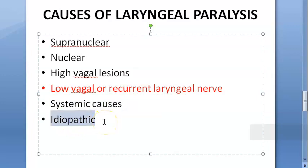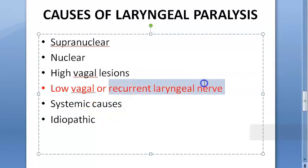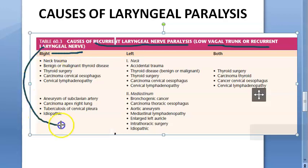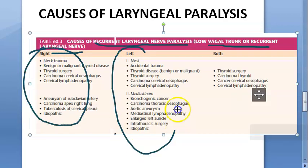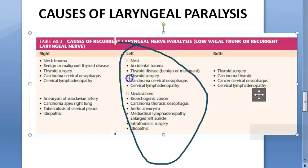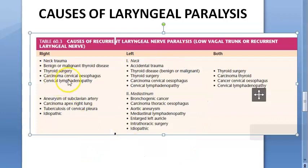Idiopathic causes account for about 30% of cases — meaning the cause is truly unknown. Focusing on recurrent laryngeal nerve paralysis: causes are listed for right-sided, left-sided, and bilateral involvement. Left-sided causes are more numerous because the left course of the nerve is longer, making the left recurrent laryngeal nerve more prone to paralysis.